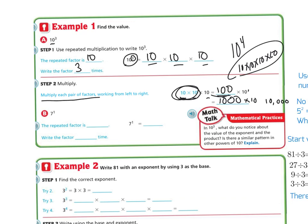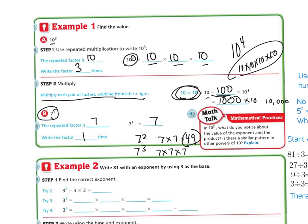Now let's work through 7 with an exponent of 1. The repeated factor is 7, and we're writing it one time, so it's just 7. If the exponent were 2, it would be 7 times 7, which equals 49. And if the exponent were 3, it would be 7 times 7 times 7: 7 times 7 is 49, and 49 times 7 is 343.